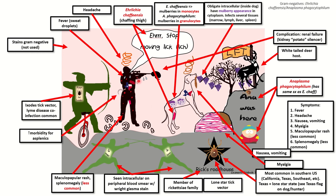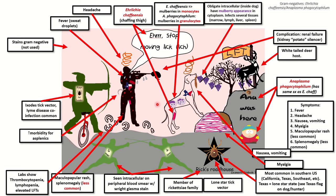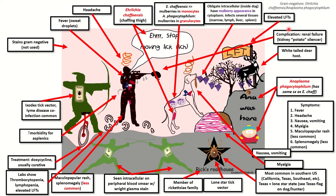Anaplasmosis or Ehrlichiosis should come to mind for outdoorsy people with myalgias. The labs would show thrombocytopenia, lymphopenia, and elevated LFTs. Thrombocytopenia is represented by the broken plates — broken platelets or low platelets. Lymphopenia is represented by the dog having these infected neutrophils and monocytes within him, and elevated LFTs with the elevated LFT flag here. The treatment is doxycycline, which is the same treatment for Lyme disease, and that's usually curative.